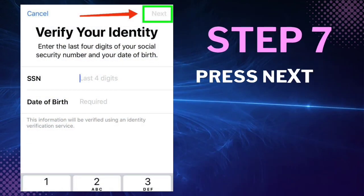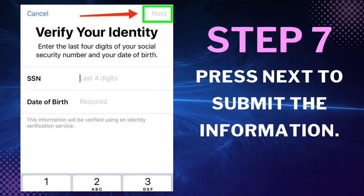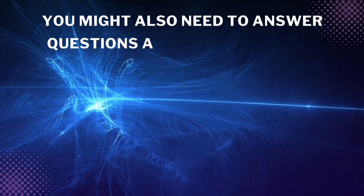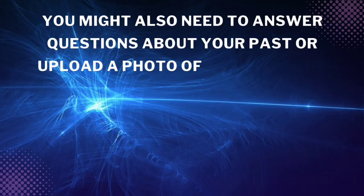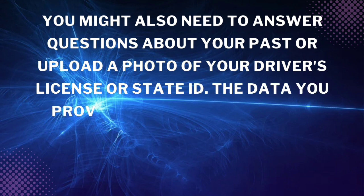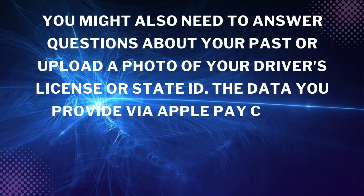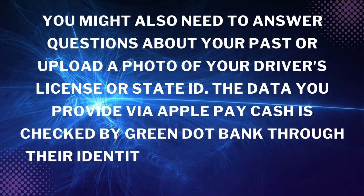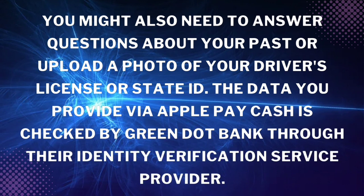Step 7: Provide the last four digits of your Social Security number and your date of birth, then press Next to submit the information. You might also need to answer questions about your past or upload a photo of your driver's license or state ID. The data you provide via Apple Pay Cash is checked by Green Dot Bank through their Identity Verification Service provider.